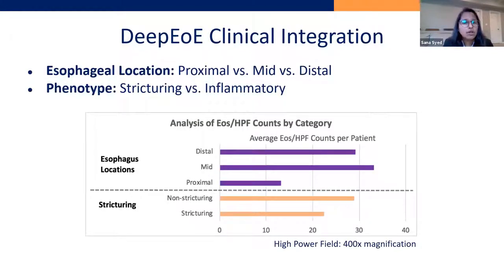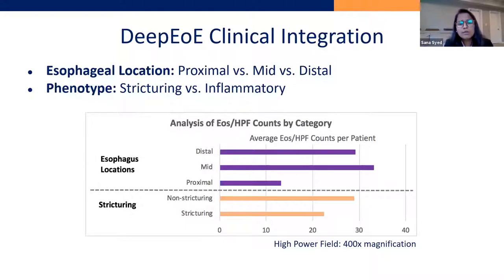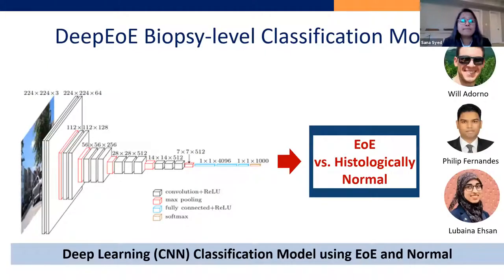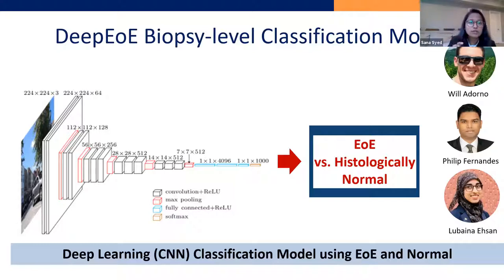We did correlations to look at esophageal locations and by stricturing phenotype. The distal and mid-esophagus typically have more EO counts, but there really wasn't a huge difference — this is a very limited dataset based off just EO counts for stricturing and non-stricturing phenotypes. We then said let's see if the model can give additional insights. There's been work by pathologists and clinical gastroenterologists who are perplexed by this disease, in which patients go on to have histologic remission — EO counts go to less than 15 — but they continue to have symptoms. So are there other features in the biopsies that we need to be looking at?